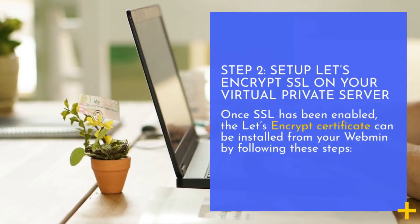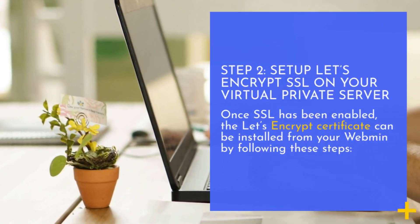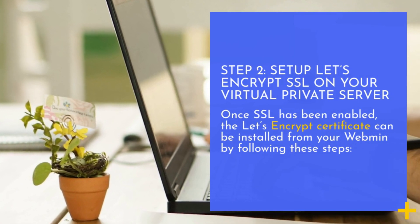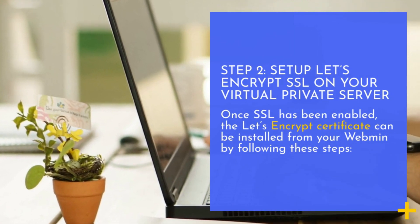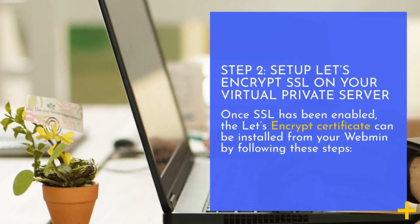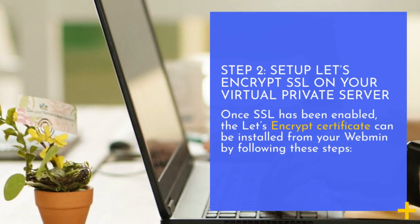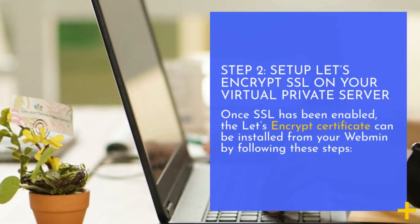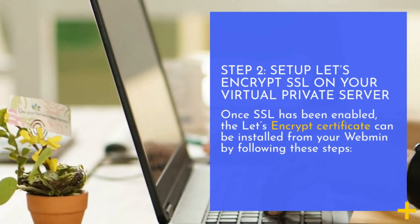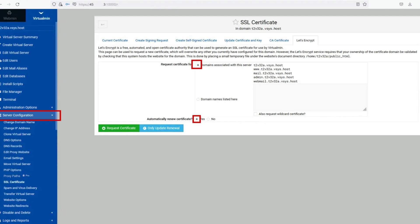Step 2: Set up Let's Encrypt SSL on your Virtual Private Server. Once SSL has been enabled, the Let's Encrypt certificate can be installed from your Webmin by following these steps. To configure your SSL certificate, navigate to the Server Configuration menu. After that, go to the tab labeled Let's Encrypt, and be patient as the Let's Encrypt section loads.